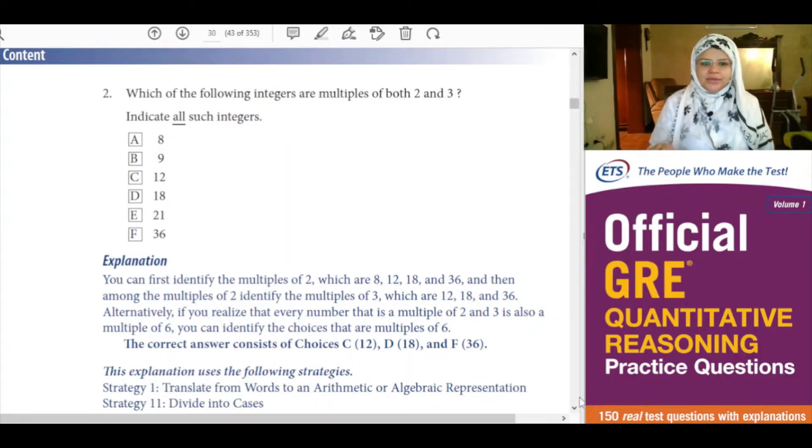Explanation: You can identify the multiples of 2, which are 8, 12, 18, and 36, and then among the multiples of 2, identify the multiples of 3, which are 12, 18, and 36.